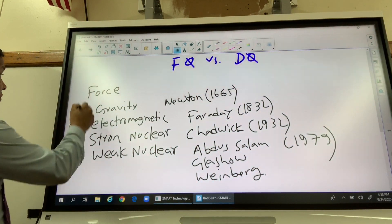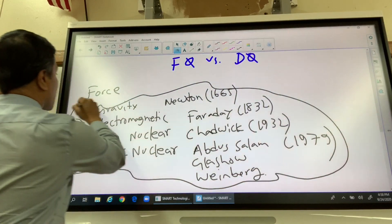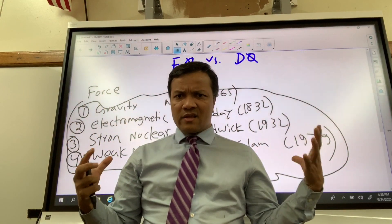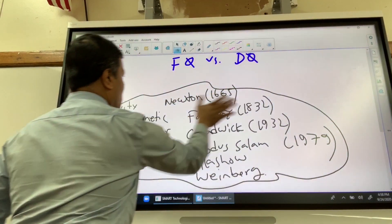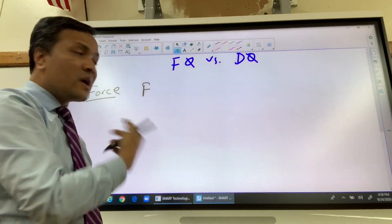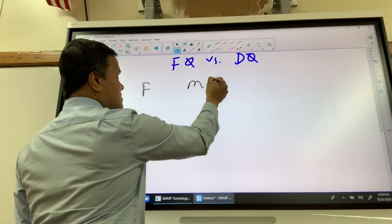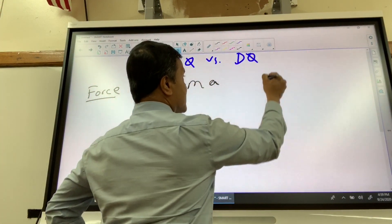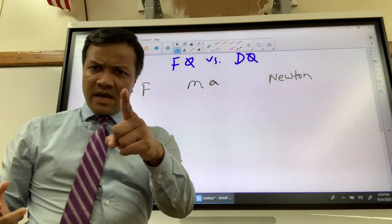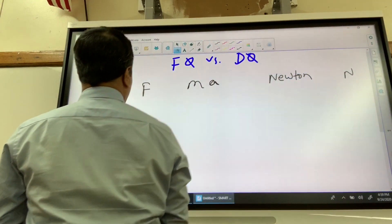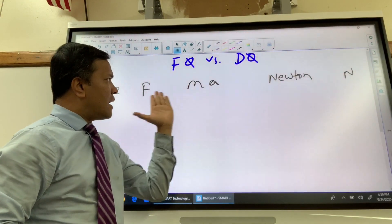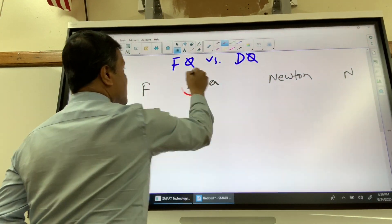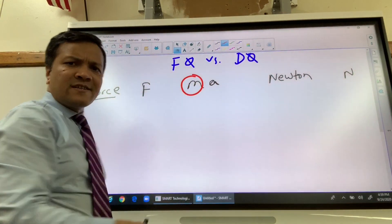Now back to business. I'm going to show you why force is a derived quantity and not a fundamental quantity. F is the dimensional symbol, and the equation is F = ma. The SI unit is newton and the unit symbol is N. When you see ma, you see one fundamental quantity — mass — but acceleration is not a fundamental quantity. There is a monster sitting inside acceleration.